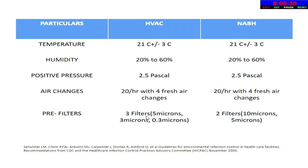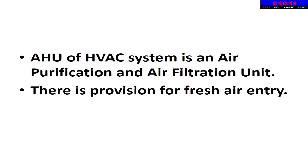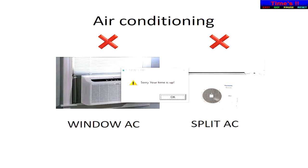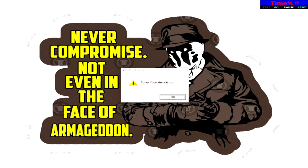CDC recommends having three filters while NABH mandates the use of at least two filters. What is so unique about HVAC is that its AHU is both an air purification and air filtration unit, and there is provision for fresh air entry — these are the most important parameters in decreasing the microbiological load inside the theatre. Window ACs and split ACs should never be placed since these are pure recirculating units and may contain pockets of microbial growth. HVAC can be expensive, but it is better to cut down on other things rather than compromising on this aspect.